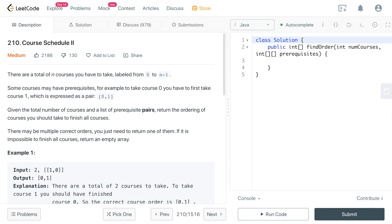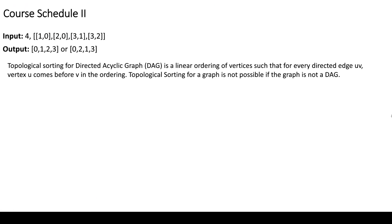Before moving to the example, let's discuss a graph theory topic: topological sorting. The definition of topological sorting for a directed acyclic graph is a linear ordering of vertices such that for every directed edge u → v, vertex u comes before v in the ordering. Topological sort is not possible if the graph is not a DAG. This question is essentially an application of topological sorting.